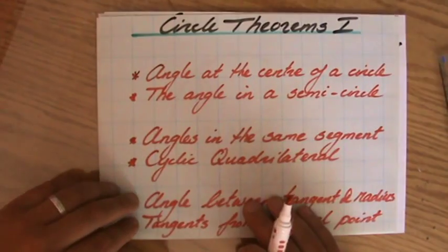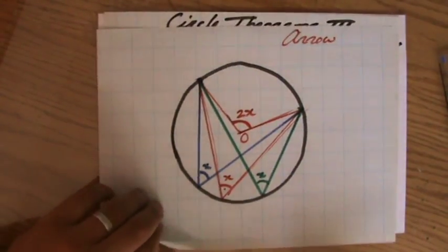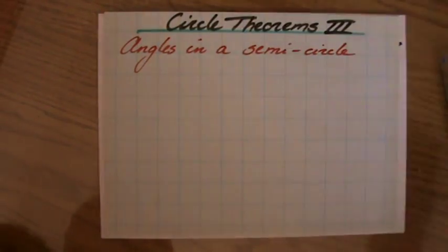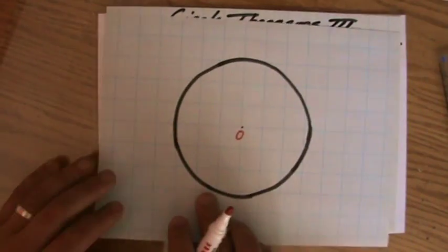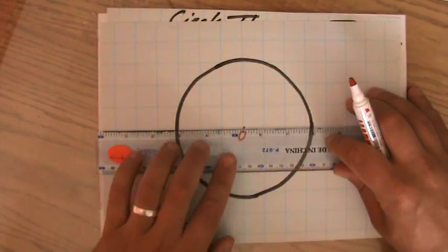And now I'm going to have a look at the angles in a semicircle, which is closely related to this one, or actually exactly the same. So I have sketched this circle here. So a semicircle is half a circle. I hope you realize that.